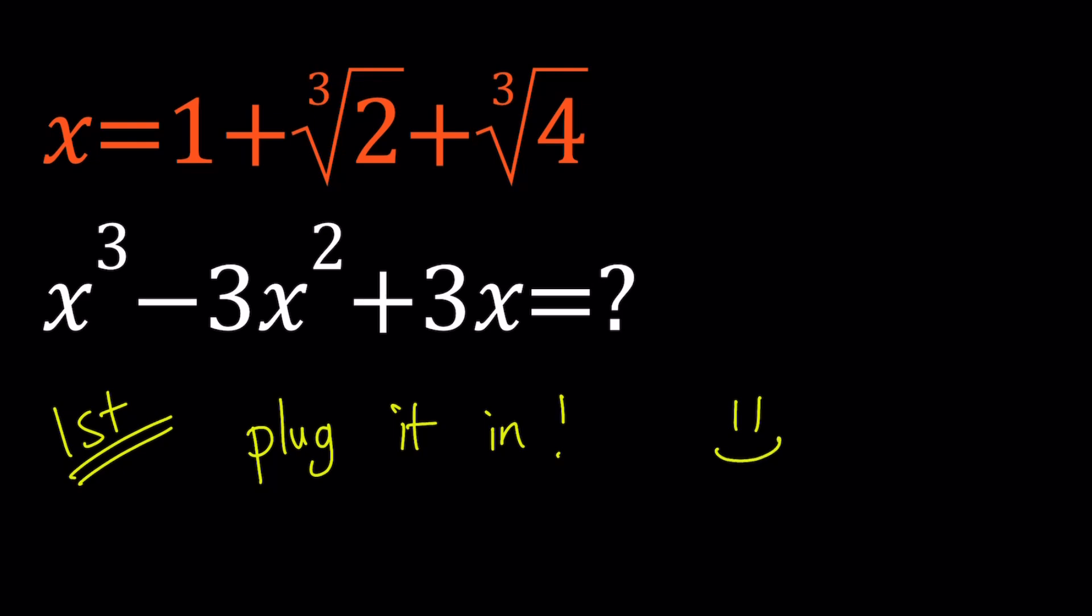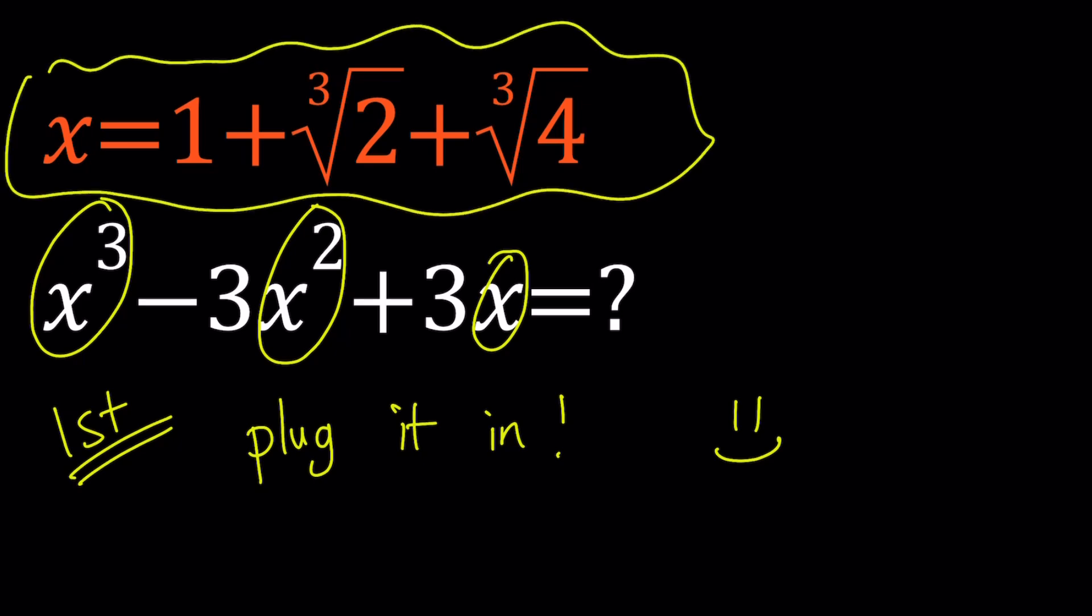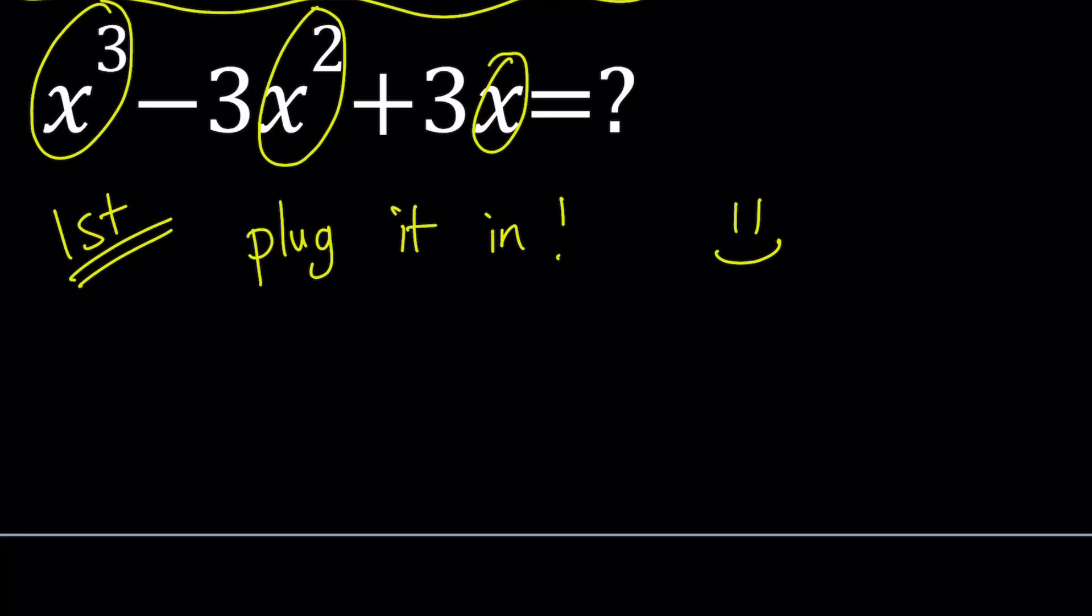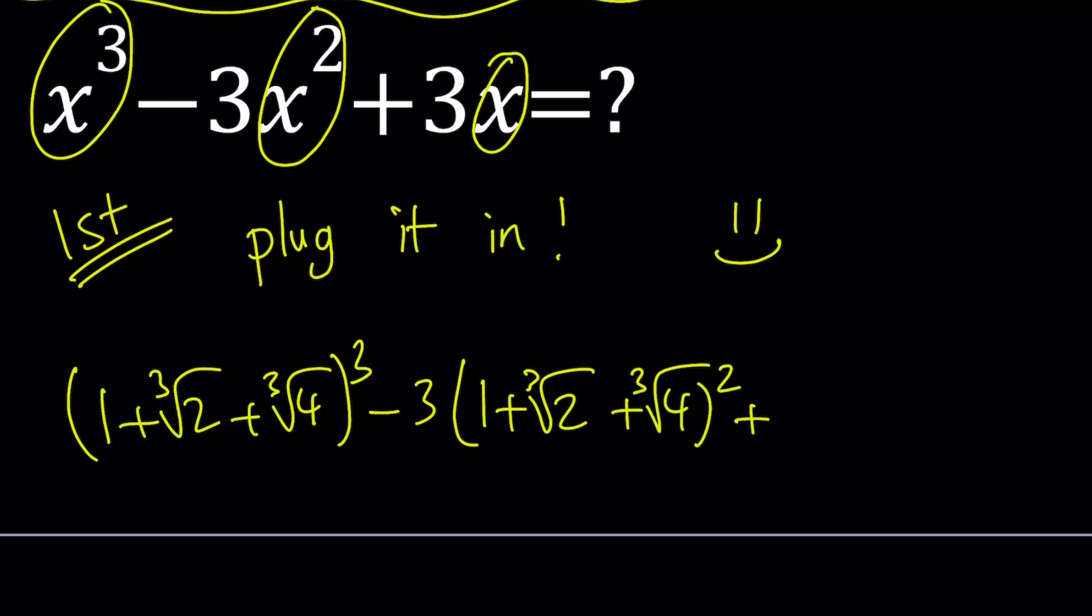Okay, so we're just going to plug it in and see what happens. That's basically brute force. We're going to replace x with this thing here, a very radical expression. If you do that, you're going to get the following. 1 plus cube root of 2 plus the cube root of 4 will be cubed minus 3 times the same expression squared plus 3 times that expression.